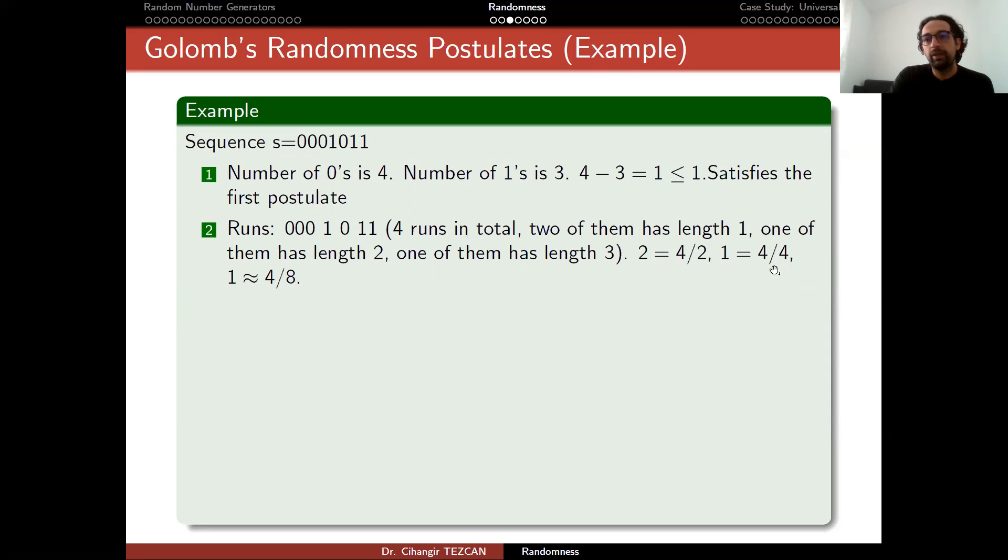Half of them should be length one, and one fourth of them should be length two, and one eighth of them should be length three. Of course, four over eight is not an integer. So it's close to one. So this also satisfies the second postulate.